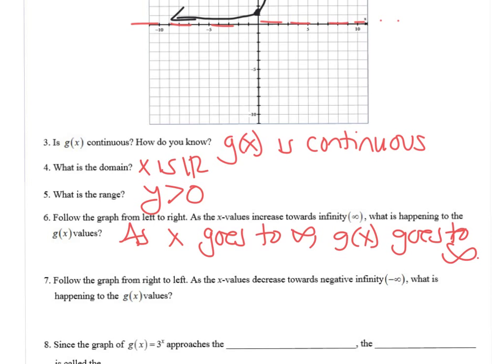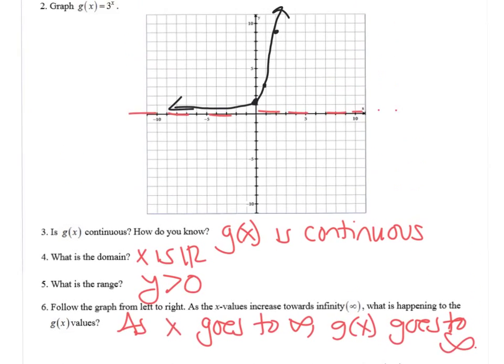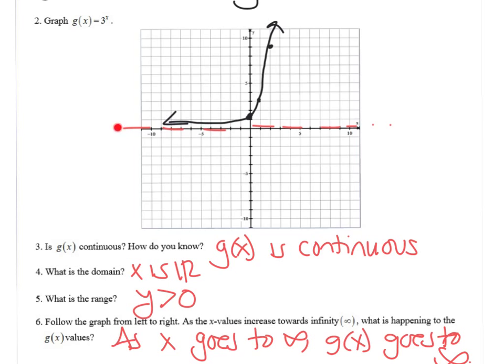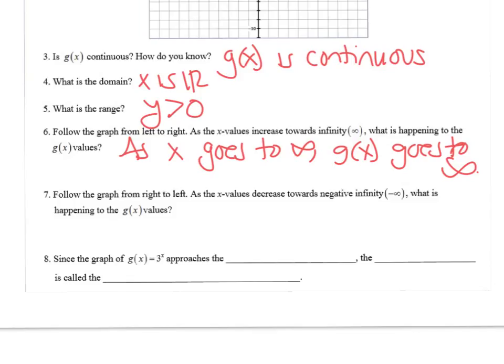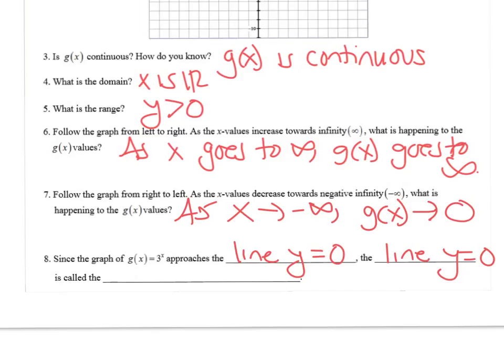But as we go right to left to negative infinity, so as we go to negative infinity, our g of x values are getting close to 0. Instead of go to, I'm going to use an arrow. So since the graph of 3 to the x approaches the line y equals 0, the line y equals 0 is called the horizontal asymptote.